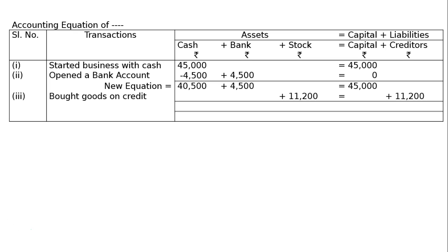Adding the new transaction to the previous equation, the final accounting equation is: cash rupees 40,500, bank rupees 4,500, stock rupees 11,200 equals capital rupees 45,000 plus creditors rupees 11,200. This is the final answer.